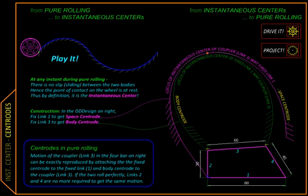Instantaneous because it can change the next moment, it can shift, and as it shifts if we plot the path it's called the centrode.